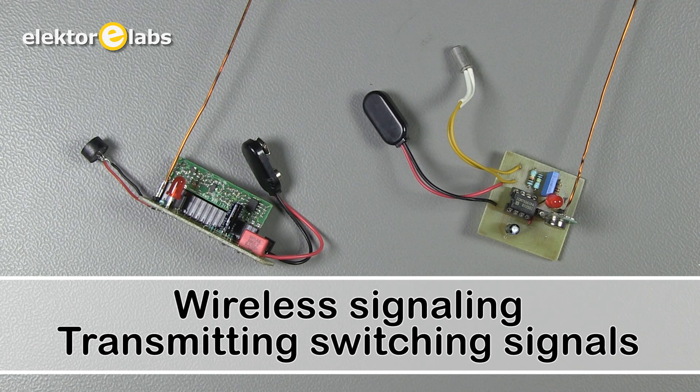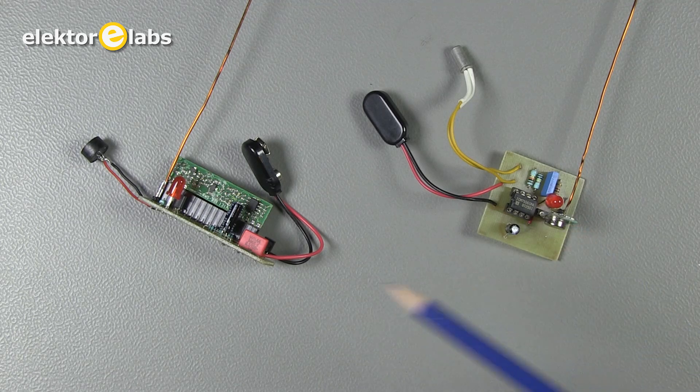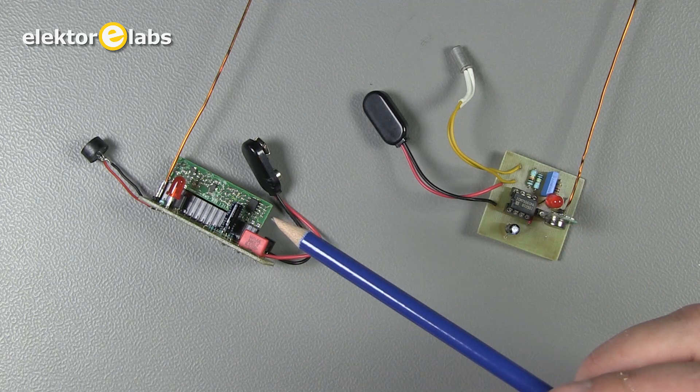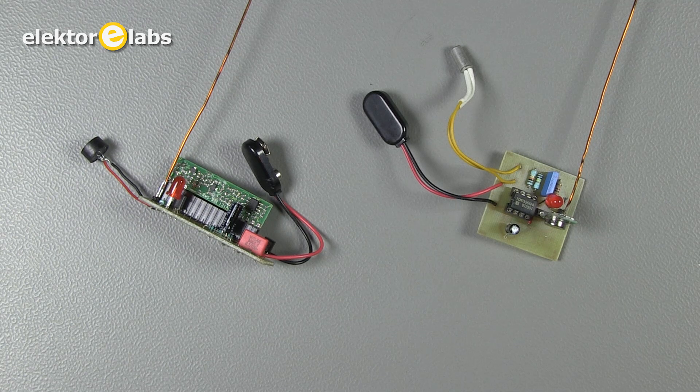This wireless signaling project consists of a small transmitter and receiver which use a cheap ready-made transmitter and receiver module for the 433 megahertz ISM band where type approved low power radios may be used license free.